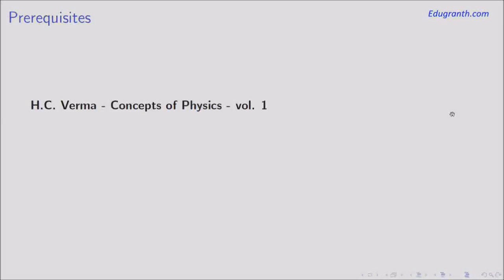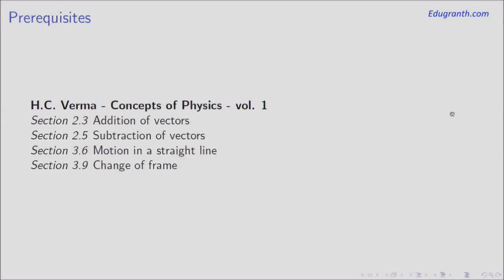You can go through these concepts in any standard physics textbook like Halliday Resnick or H.C. Verma. Personally I like H.C. Verma. If you are studying from this book, section 2.3 and 2.5 deal with addition and subtraction of vectors, section 3.6 explains motion in a straight line, and section 3.9 covers change in frame of references. For other books, please go through the corresponding sections. I will briefly revise some of the concepts here before moving on to the problem.